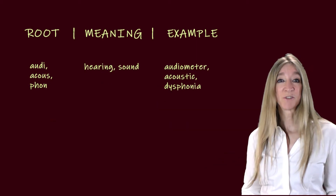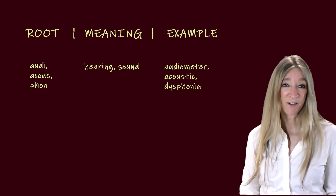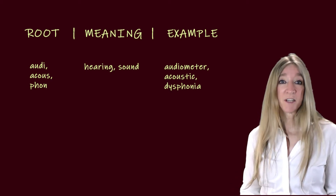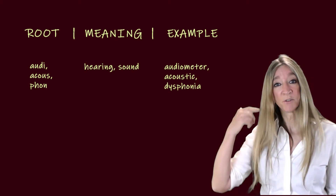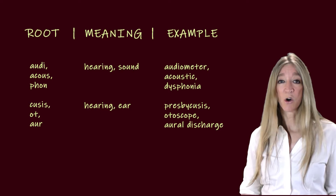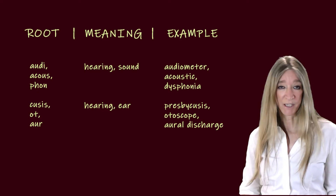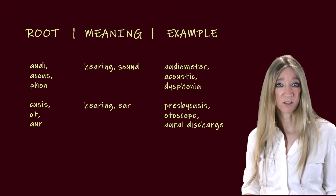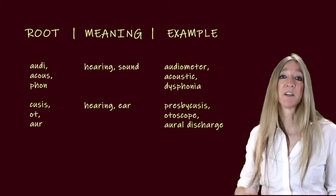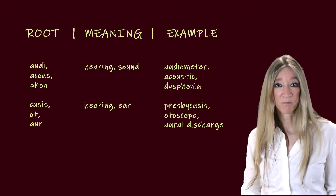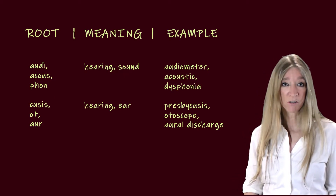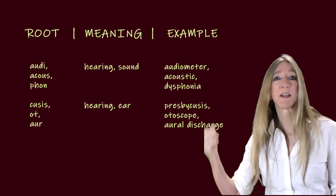Moving on to the ears now: the root audi, meaning sound. You often use the word audio simply to mean sound. An example in medicine is audiometer, which is an instrument used to measure a person's hearing. The next roots, cusis, ot, and ore, all meaning hearing or ear. An example: presbycusis, which is the loss of hearing associated with old age. Otoscope — an instrument used for a visual examination of the ear. And orrhoea discharge, which would be a discharge coming out of the ear.